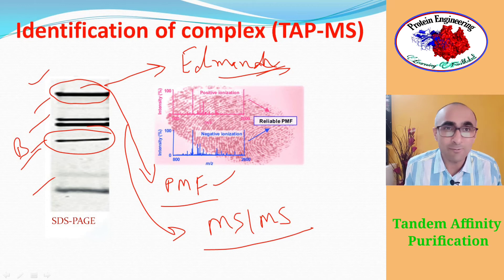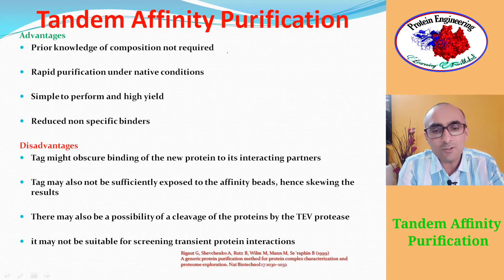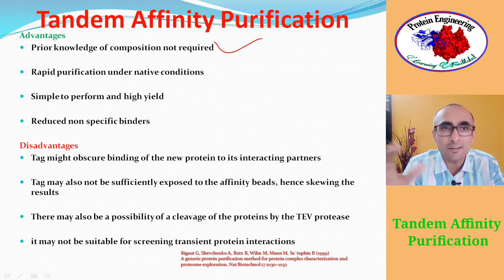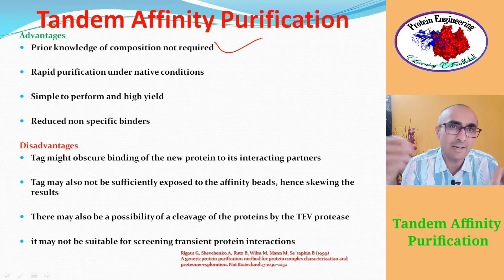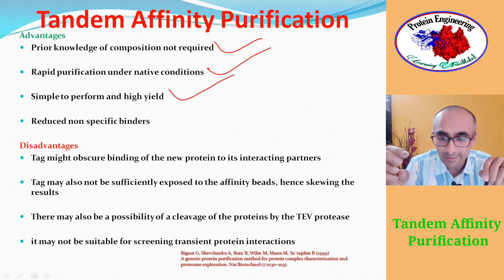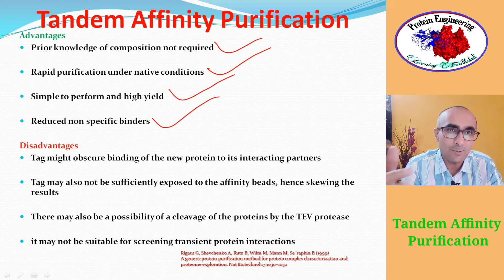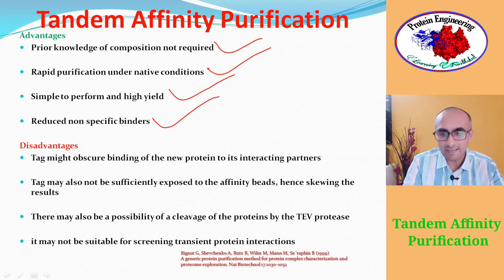Tandem Affinity Purification has several advantages. Prior knowledge of the composition of the complex is not required — you don't need to know the partners in advance. It is a very rapid purification method performed under native conditions, is simple to perform, gives a relatively high yield, and reduces non-specific binders because there are two steps of purification.